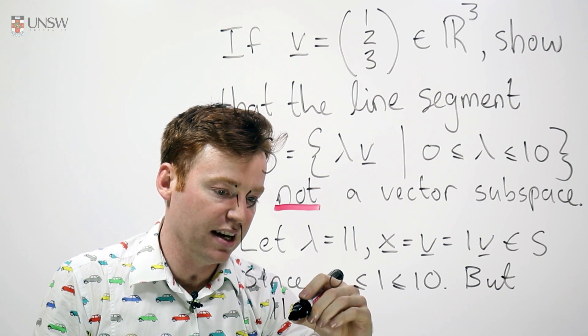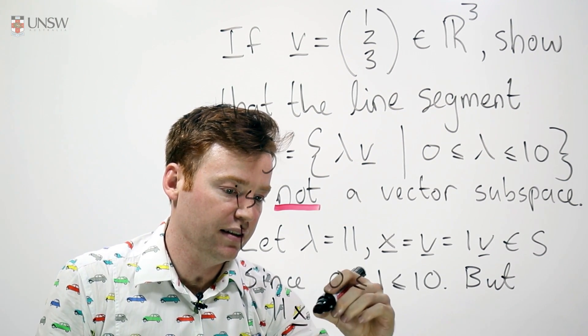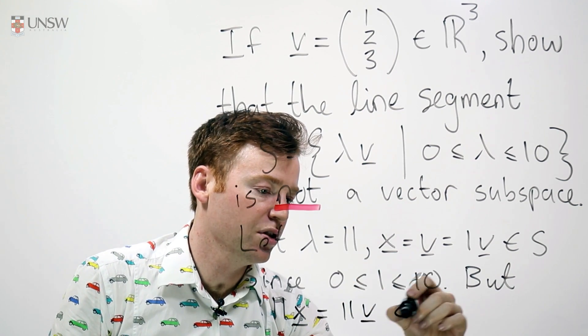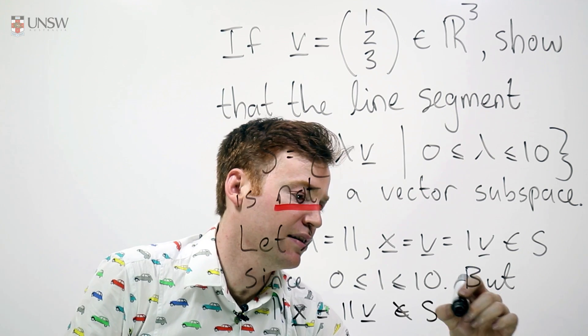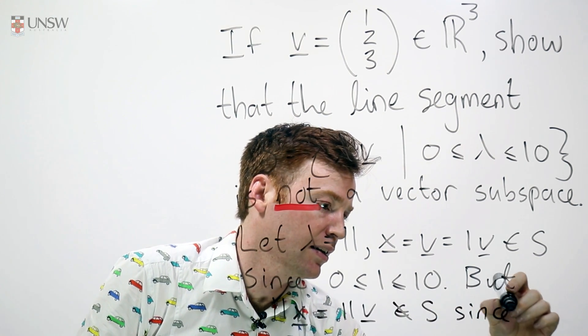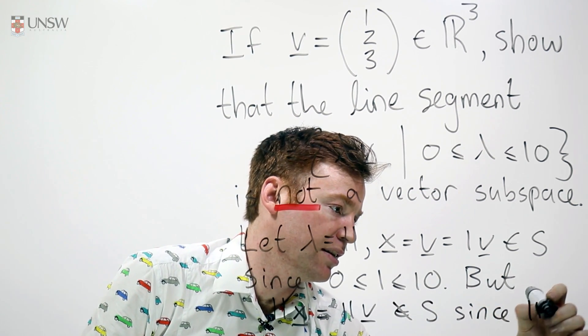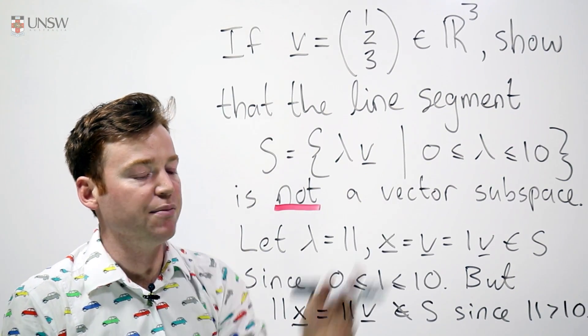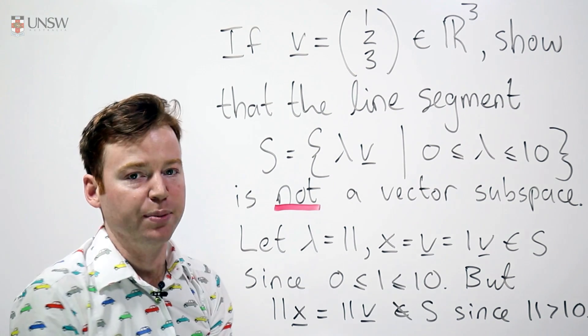11 times X is equal to 11V, which is not in S since 11 is greater than 10. It can't be in S because it's in the shape lambda V, but lambda is too big to be in S.